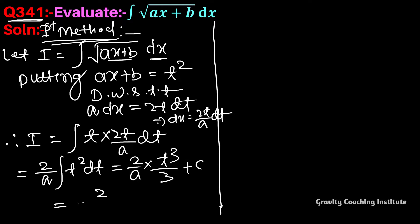So it equals 2/3a. Now we put the value of t back. We took t² equal to ax+b, so this becomes (ax+b)^(3/2) plus c. Now we solve this using the second method.